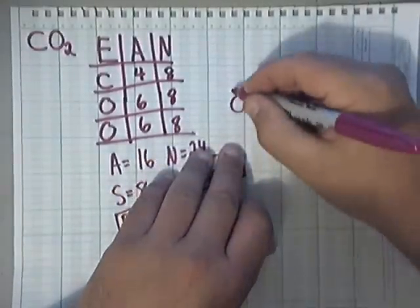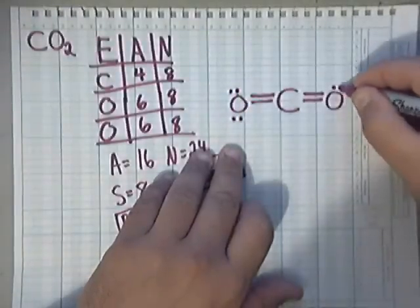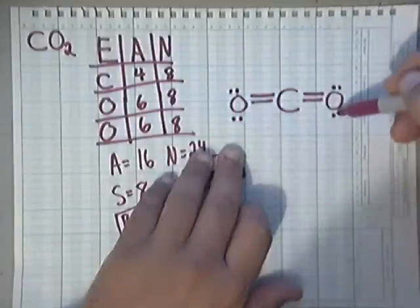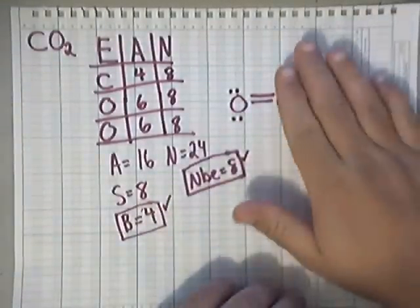So, we need to give them four. So, one, two, three, four. One, two, three, four. And if you count, that's two, four, six, eight. I've used all eight of my non-bonding electrons, and I satisfy the octet rule.